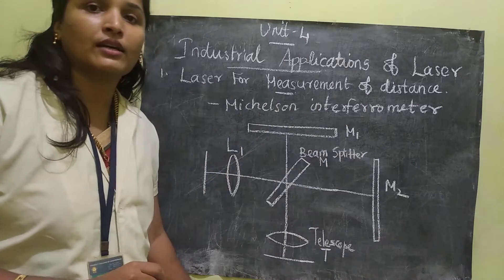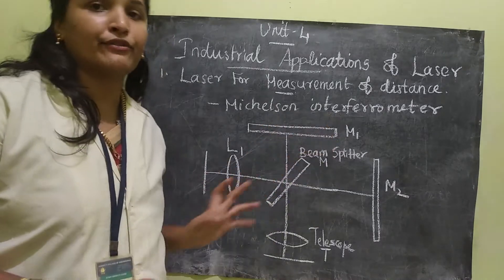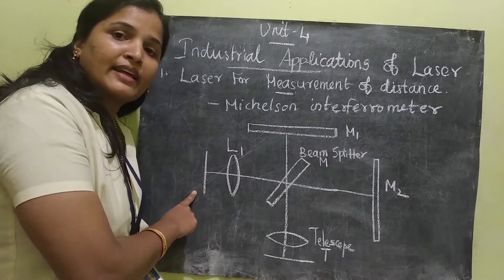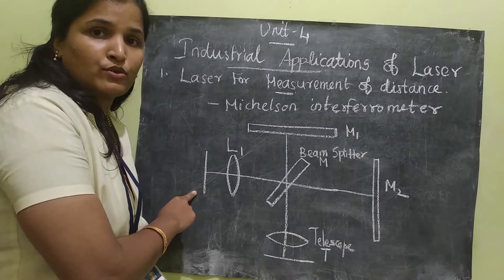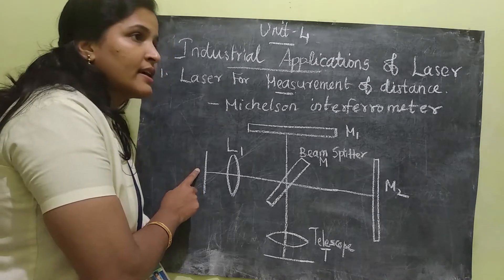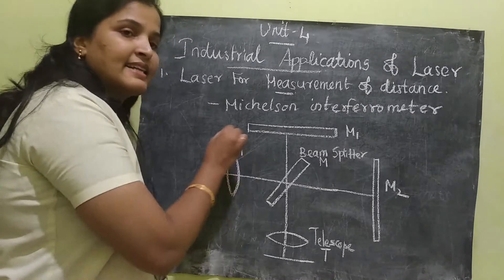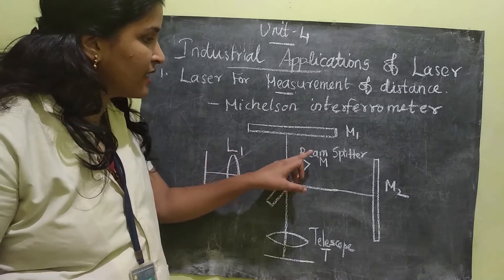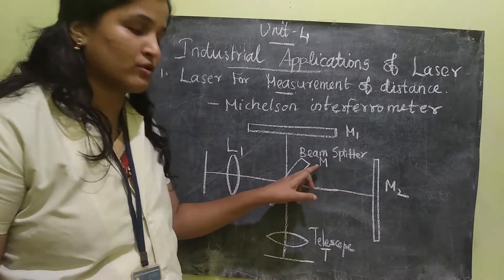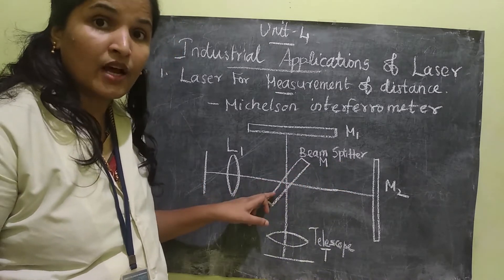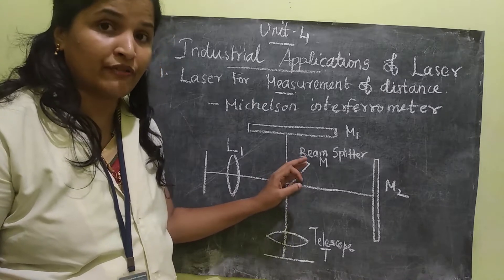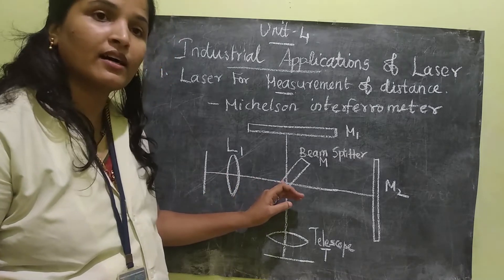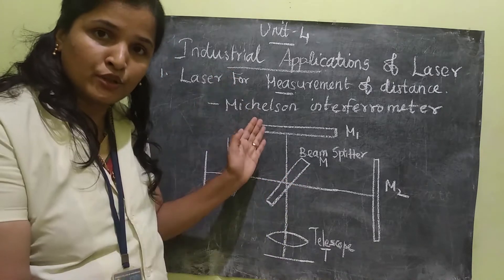This is the construction of the Michelson interferometer. Here we have a monochromatic light source — that means the laser light source. This laser light source is made parallel by using lens L1. The parallel beam moves towards a mirror called the beam splitter, which is inclined at an angle of 45 degrees, such that the beam striking it will be split into two.